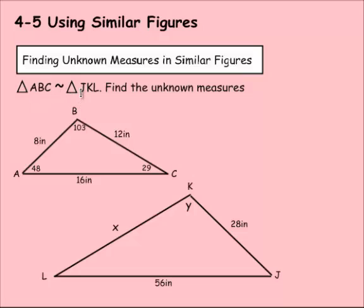So A lines up with J, B lines up with K, and C lines up with L. So if we would number it, I'd go 1 for A, 2 for B, and 3 for C.